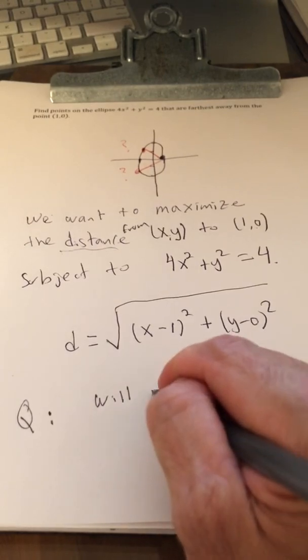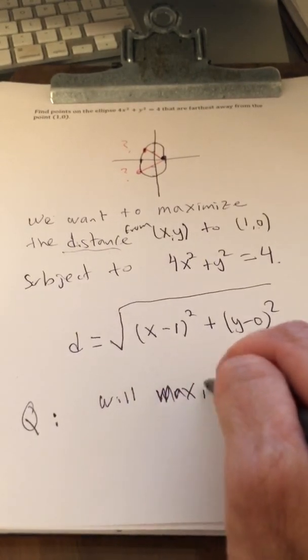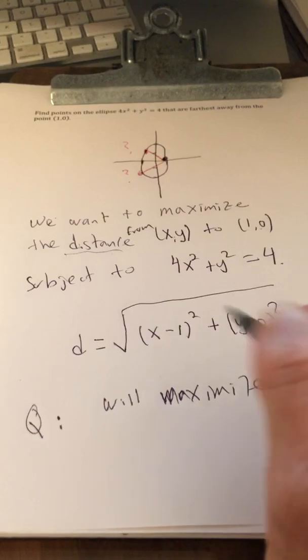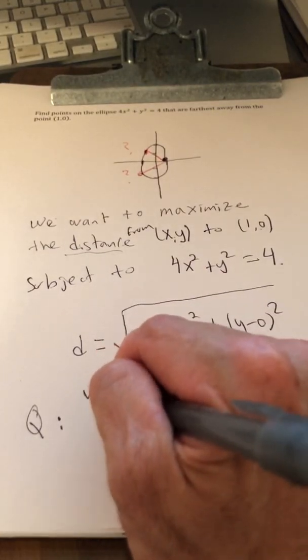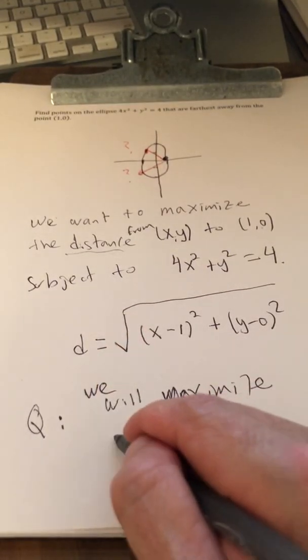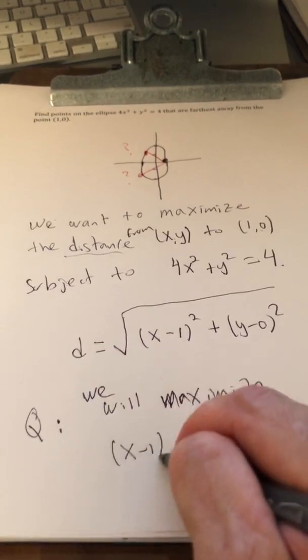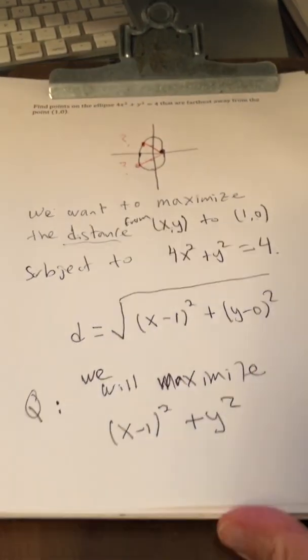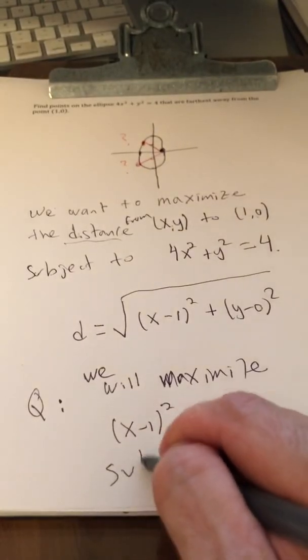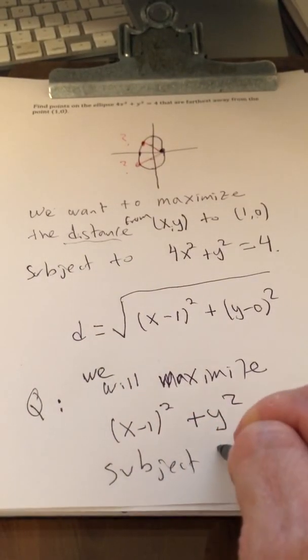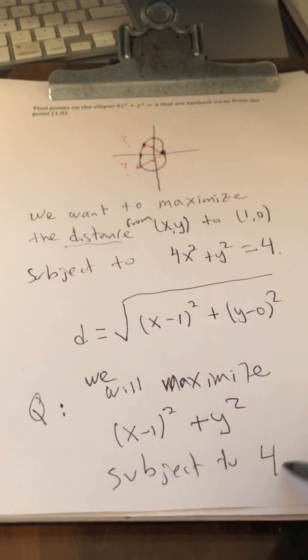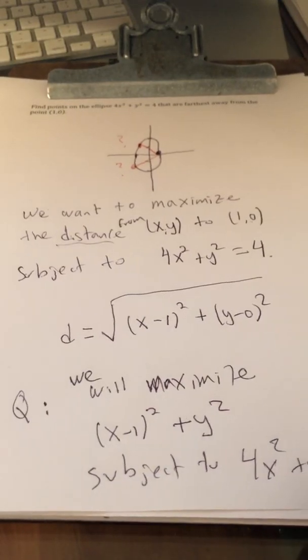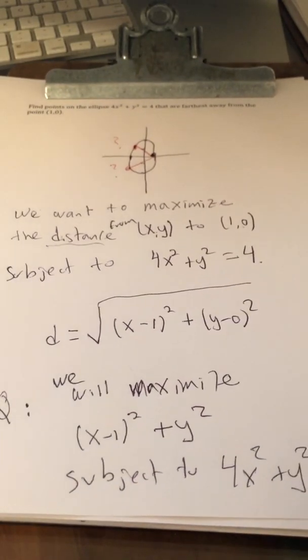So, to make this simpler, we will maximize (x minus 1) squared plus y squared, subject to the constraint 4x squared plus y squared equals 4.